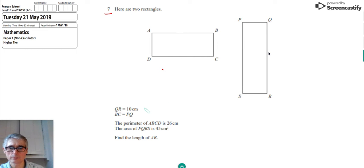And what we're told is, given all this information here, we're told that QR is 10 centimeters. So the first thing I'm going to do is just write that on there. And we're given the fact that BC equals PQ. So here's BC going from B to C, and here's PQ going from P to Q. So we're told they're equal to each other.